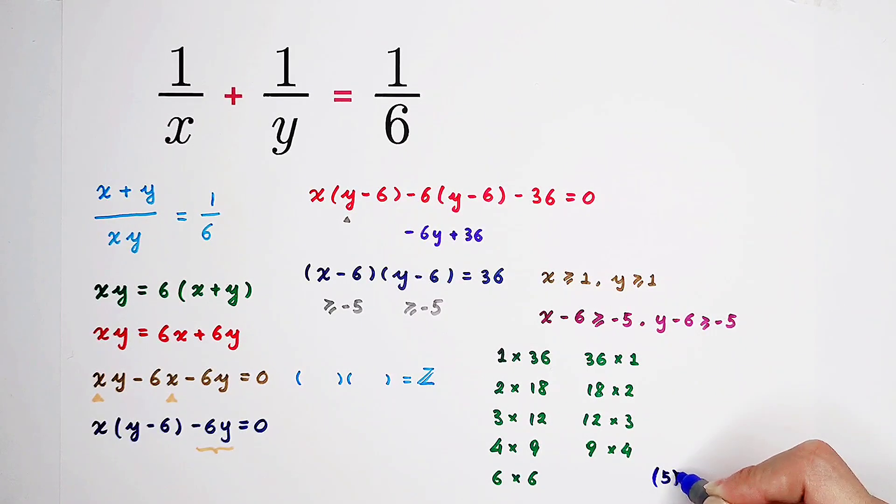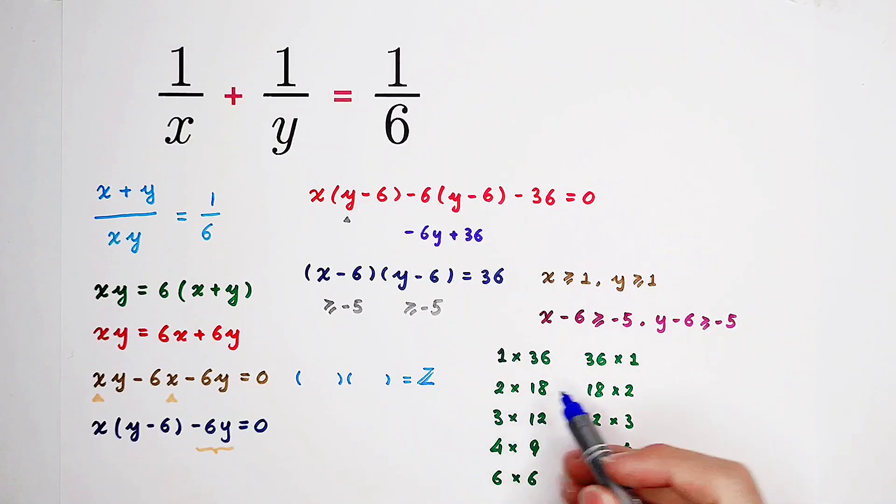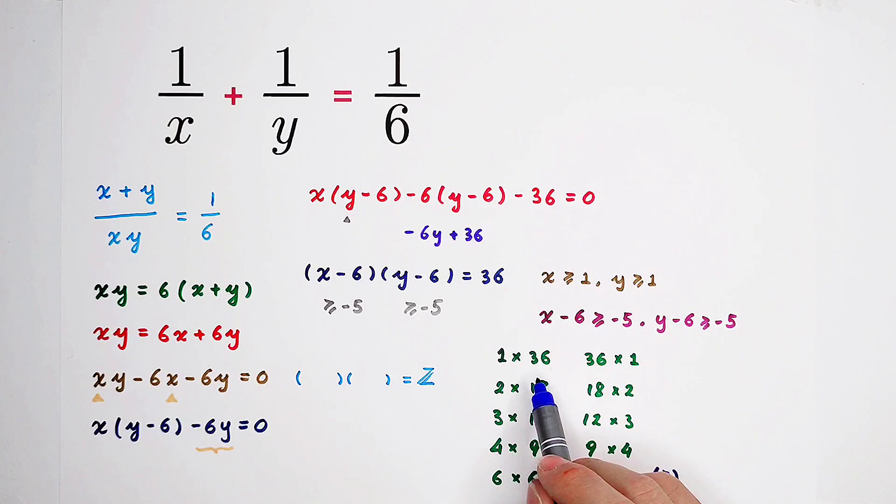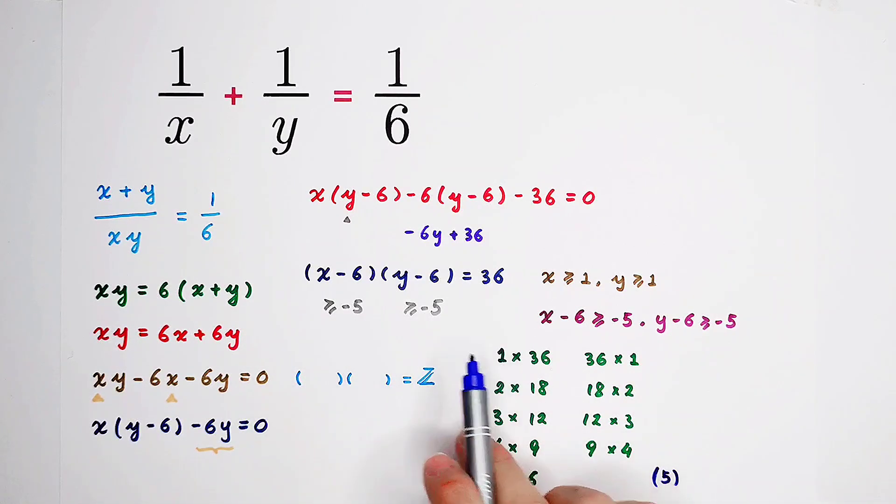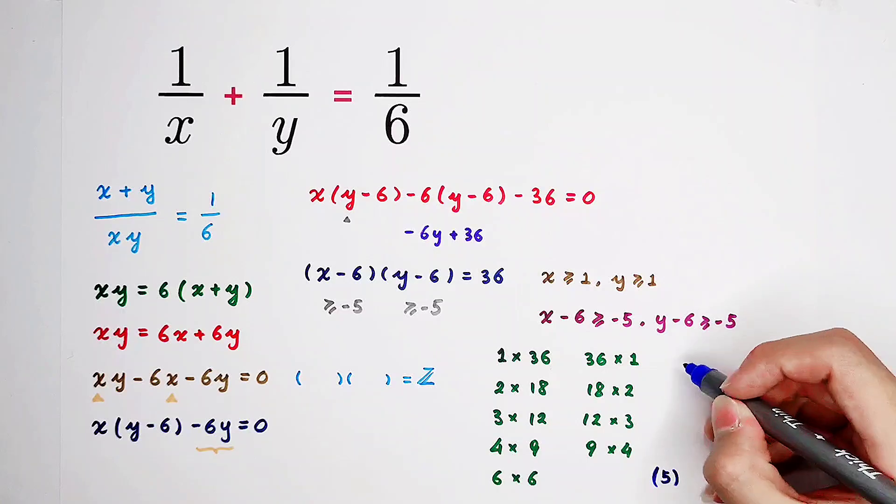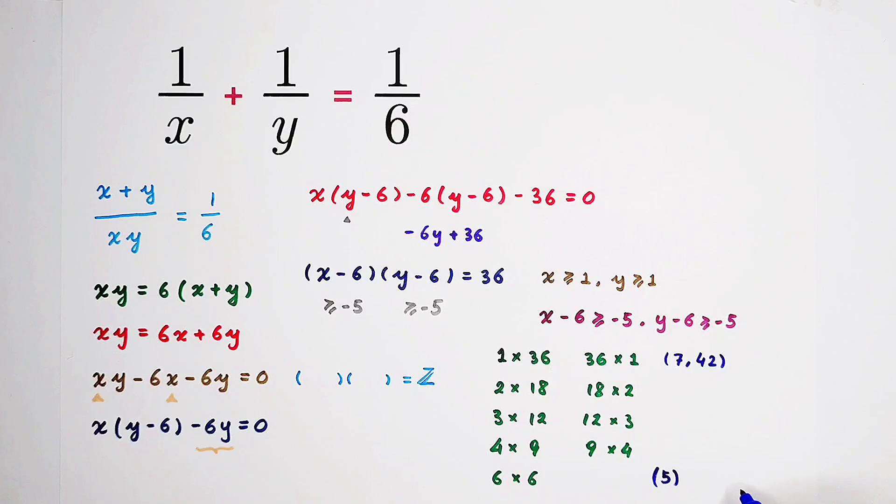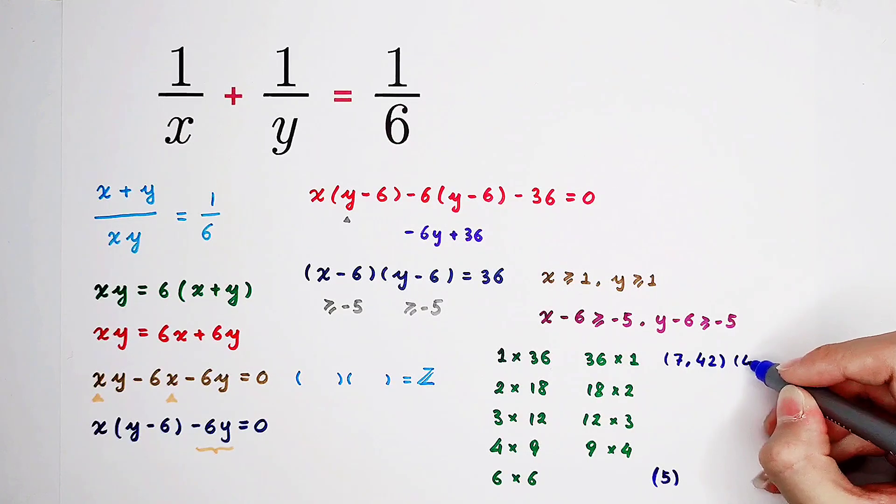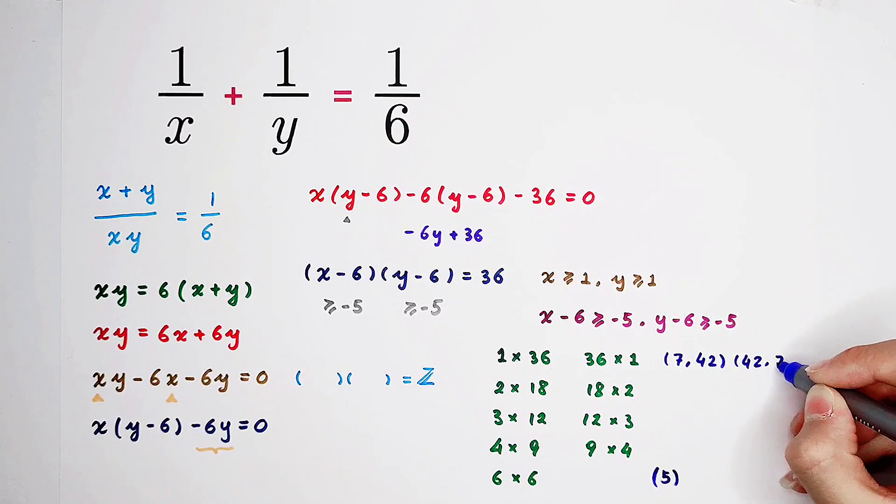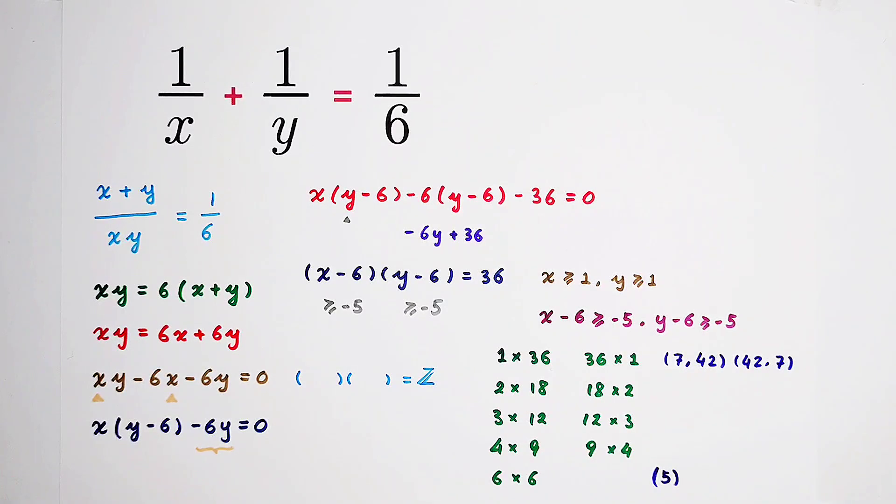For example, in our first case, 1 times 36, if x minus 6 is 1, y minus 6 is 36, we can get x is 7 and 42. If x minus 6 is 36, y minus 6 is 1, we can get it is 42 and 7. So the solutions will also change their orders, there are only 5 cases. Very good, give it a shot, and solve for all the pairs of solutions. Subscribe to me, we'll see you next time!